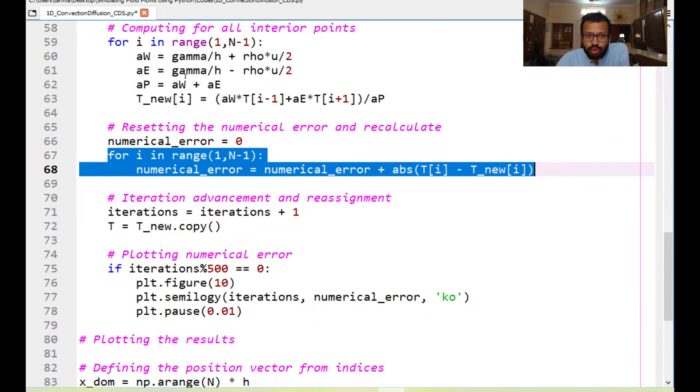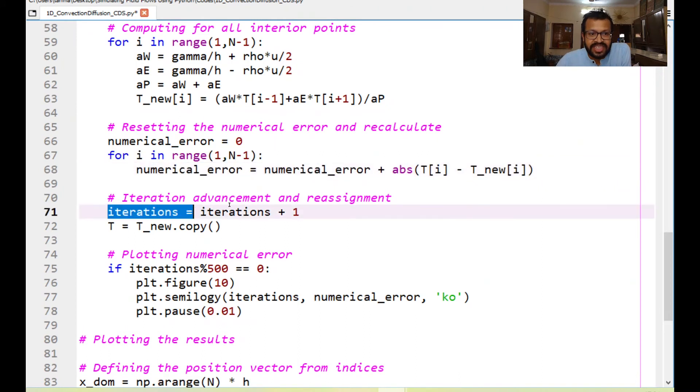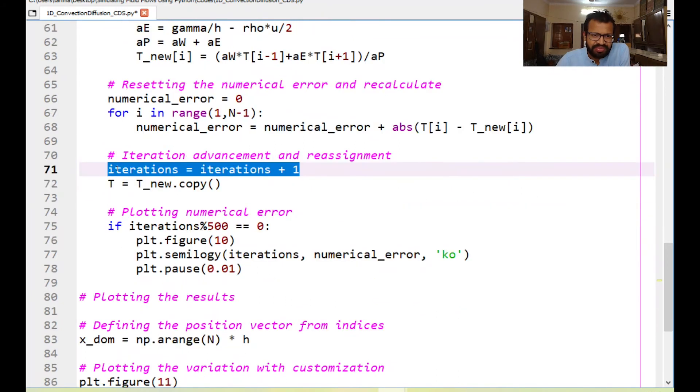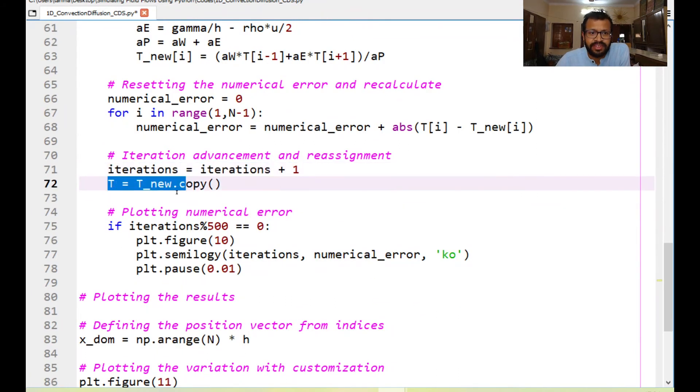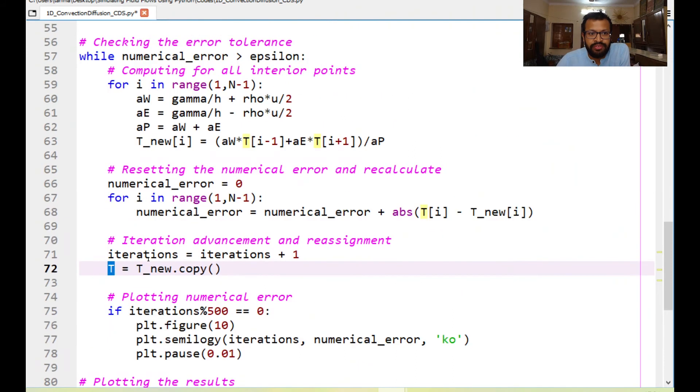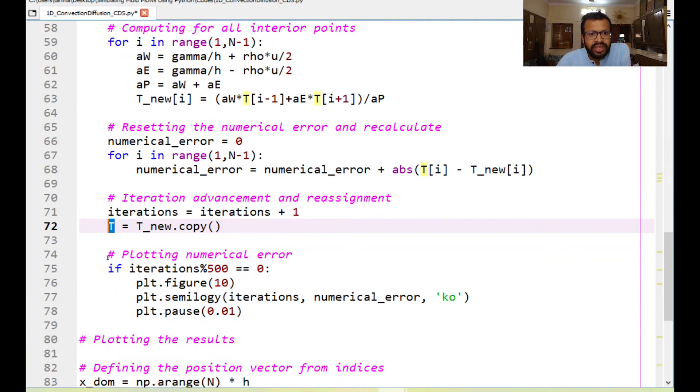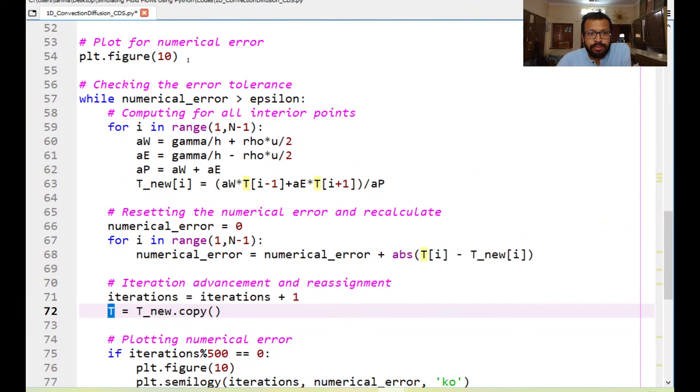So once both of these steps are done we say that we have done one iteration that is why we write iterations being iteration plus one and we copy all the stuff that is stored in the T new variable and just paste it in the T variable so that we can do this iterative process over and over again. Finally remember this plot figure 10.